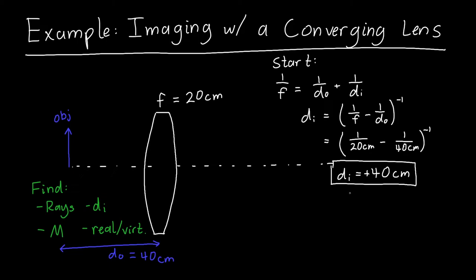And we can also calculate the magnification, which we can use our trusty formula for a single lens, which is just that the magnification is negative di over do. And so they're both 40 centimeters here, do is positive 40, di is positive 40. And so we'll end up with a magnification of negative one.